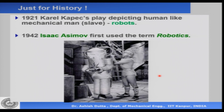For historical interest, where did the word robot come from? Essentially in 1921, this drama writer Karl Čapek wrote a play in which he said that in future there will be mechanical men replacing human beings to do dirty work in industries. He called them mechanical slaves. The word robot in the Czechoslovakian language means mechanical slave or mechanical man. This is where the word robot came from.